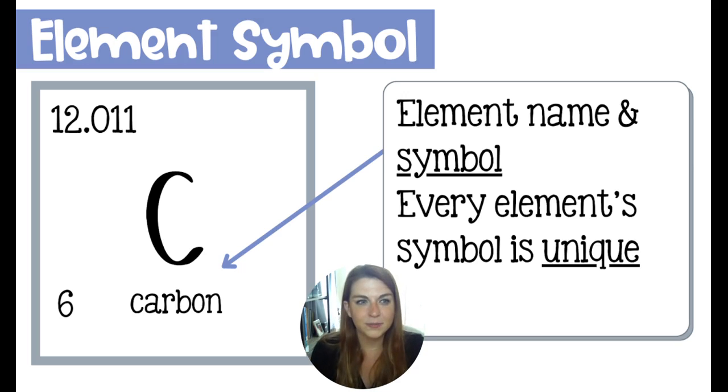But most chemists will take some time to memorize the elements. Not all of them, usually the ones that they're working with or the ones that are pertinent to their particular field. We do look them up from time to time, but the symbol is going to be unique per each element.